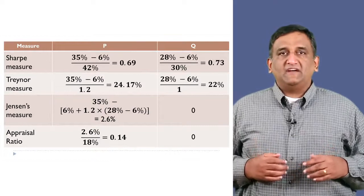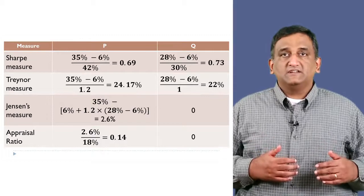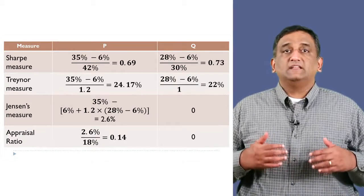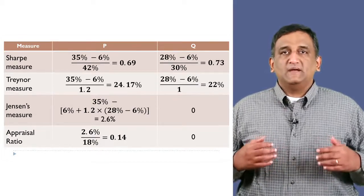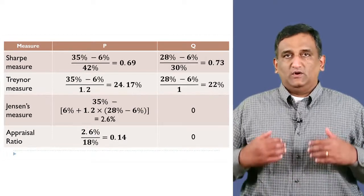Looking at these values, the Sharpe measure says that P performed worse than Q, but the other measures say that it has performed better than Q. So which measure should we use to decide whether portfolio P has performed better or worse?